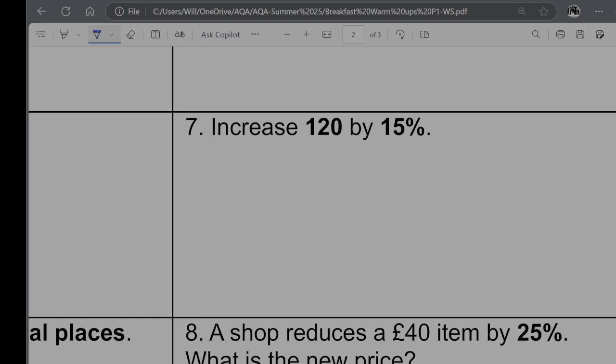Question 7, increase 120 by 15%. So we're going non-calc for this. So I'm going to say the full amount is equal to 120. So 10% is going to be equal to, kind of imagine dividing this by 10, 12. And 5% is going to be equal to half of that, so 6. So if I'm increasing by 15%, I want 115%, which I found by adding those three together. So I'm going to do the same on this side. So that's going to give me 138.